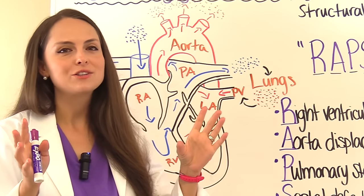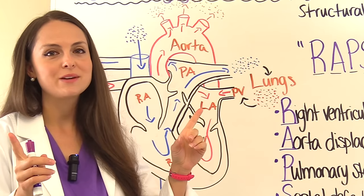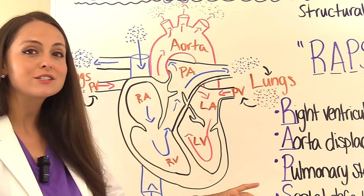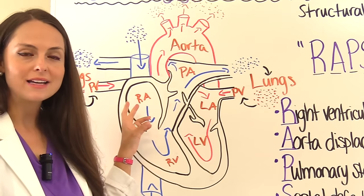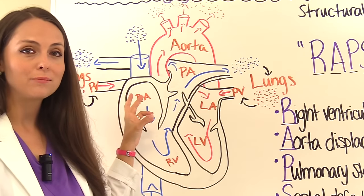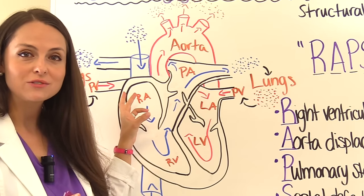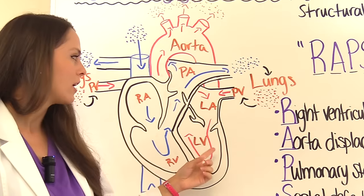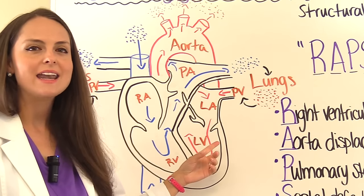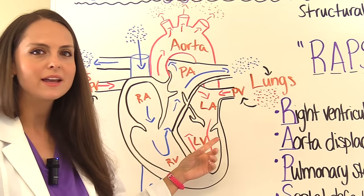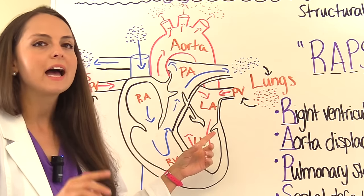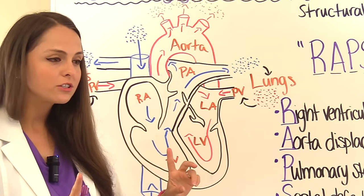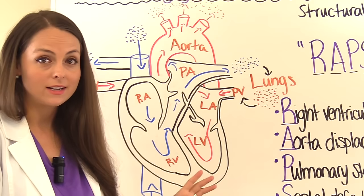Blood flow can be divided into two parts: the right side of the heart and the left side. Everything starts on the right side. The goal of the right side is to take unoxygenated blood — the exhausted blood the body just used — and get it to the lungs to be oxygenated. Then it comes to the left side, whose goal is to take that rich oxygenated blood and deliver it to the organs and tissues. The body doesn't want mixing of unoxygenated and oxygenated blood.